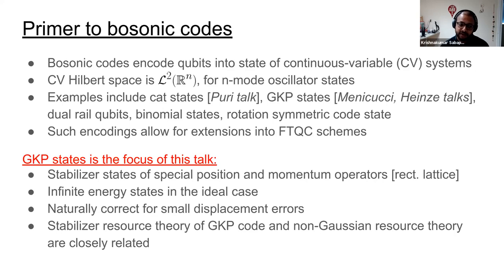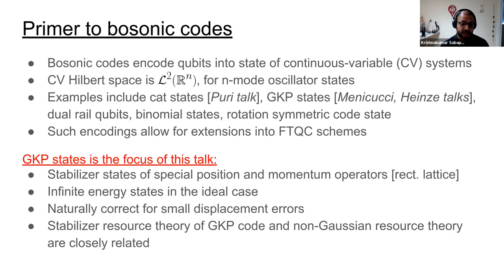These codes have been garnering a lot of interest recently, more towards their fault-tolerant schemes and how we push towards that with more realistic noise models. In this talk I'll be focusing on GKP states and the photonic aspect. GKP states are stabilized states of very special position and momentum operators. In the ideal case these are infinite energy states, so one has to think deeper as we move towards the lab. They naturally correct for small displacements, and another interesting aspect is that the GKP code is closely tied to the non-Gaussian resource theory.